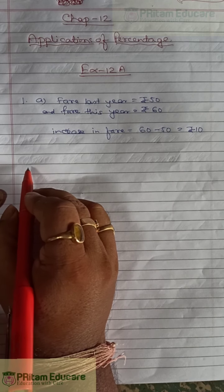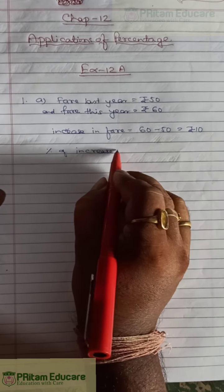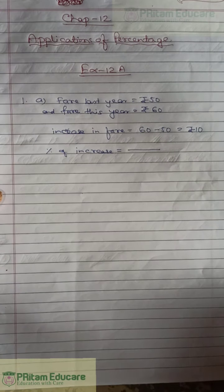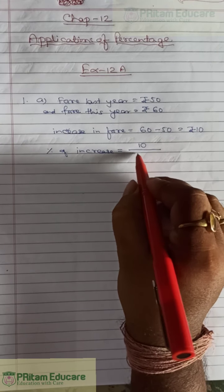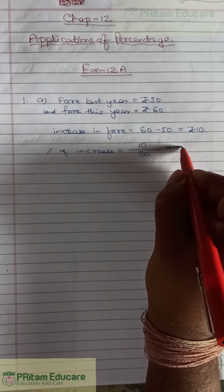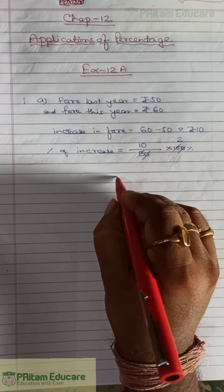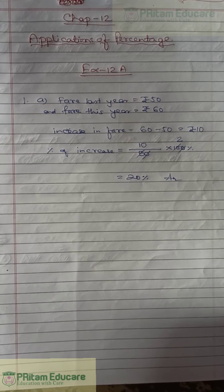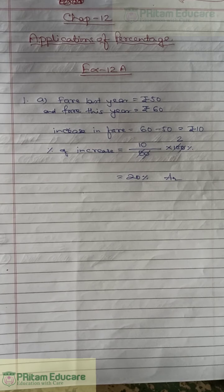Now, what is the percent of increase? The formula we use: percent of increase = increase in amount divided by the original amount, into 100. So that is 10 divided by 50, into 100 — cancel the zeros — which gives 20 percent increase. So the answer to Question 1a is 20 percent increase.